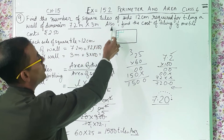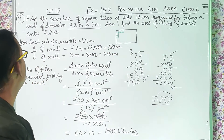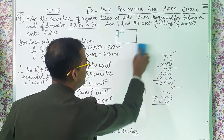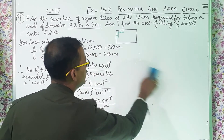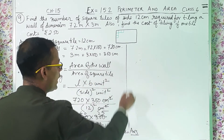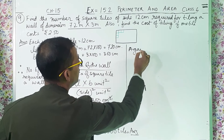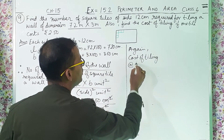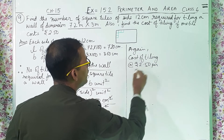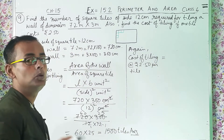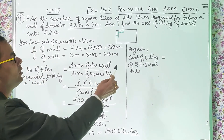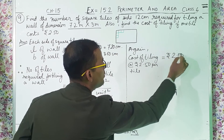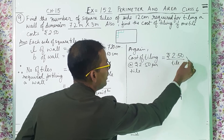Now the second part: find the cost of tiling if one tile costs rupees 2.50. So we have to find out the cost of tiling. Cost of tiling at the rate of rupees 2.50 per tile — one tile costs rupees 2.50. So we need the cost of 1500 tiles. What we will do: 2.50 per tile into 1500 tiles.